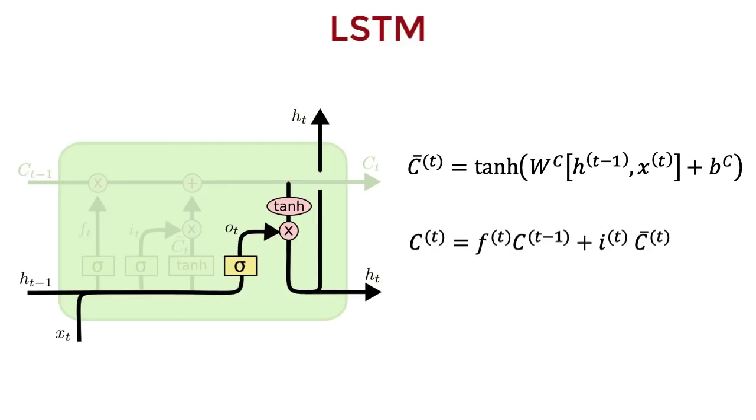The forget gate controls how much of the old state should be forgotten. This state is applied to the output gate to get the hidden vector.